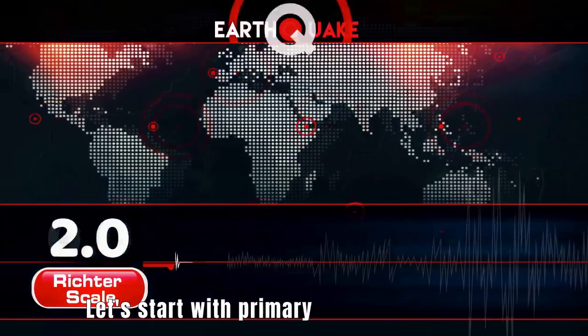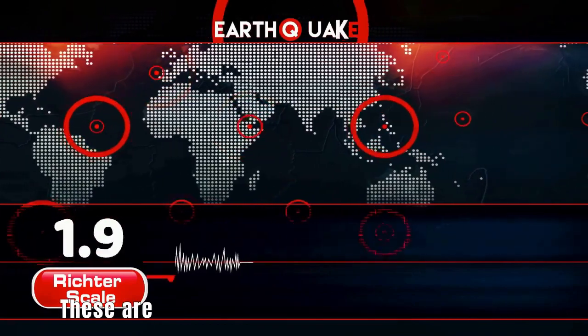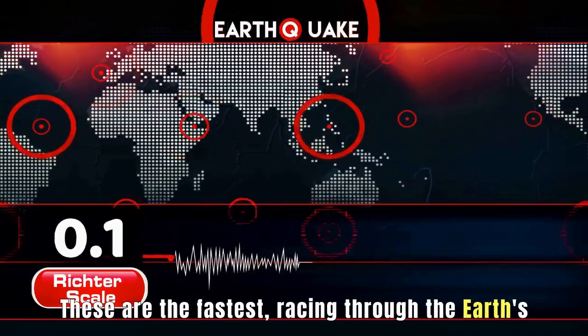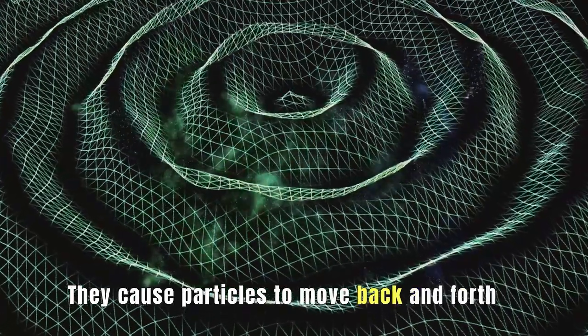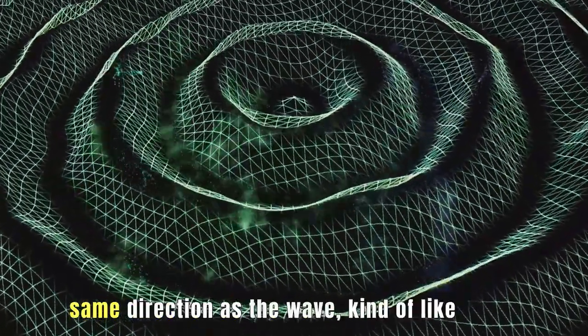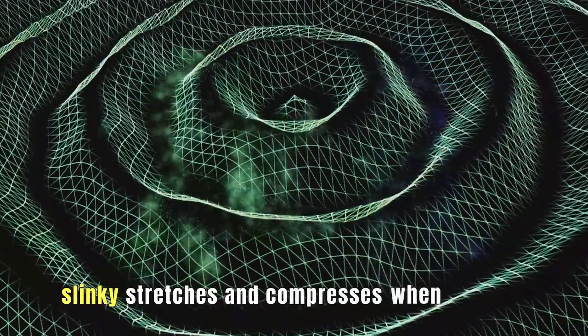Let's start with primary waves, or P waves. These are the fastest, racing through the Earth's interior like a sprinter on a track. They cause particles to move back and forth in the same direction as the wave, kind of like how a slinky stretches and compresses when you give it a push.